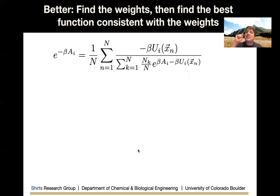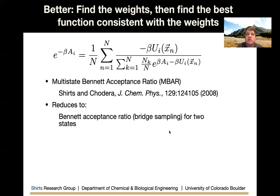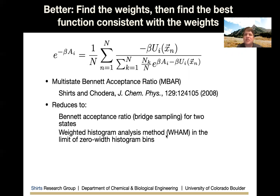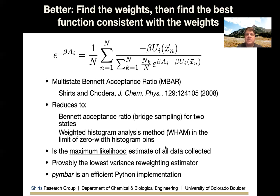The better way is to find the weights for each sample and then find the best function consistent with those weights. The approach that can be shown to be optimal under many conditions is to use the multistate Bennett Acceptance Ratio (MBAR). We carry out the biased simulations and then, without any histogramming, find the free energy of each state. From that, we can calculate the weight associated with each sample — essentially e to the minus free energy of the state minus the unbiased potential energy at that point. This reduces to the Bennett Acceptance Ratio for two states, or to WHAM in the limit of zero histogram bin width.